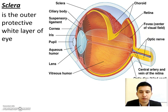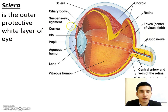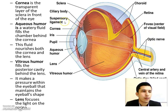The sclera is the outer protective white layer of the eye. Within the sclera, we have the cornea, which is a transparent layer of the sclera in front of the eye. The cornea is white, protects the eye, and is also transparent.